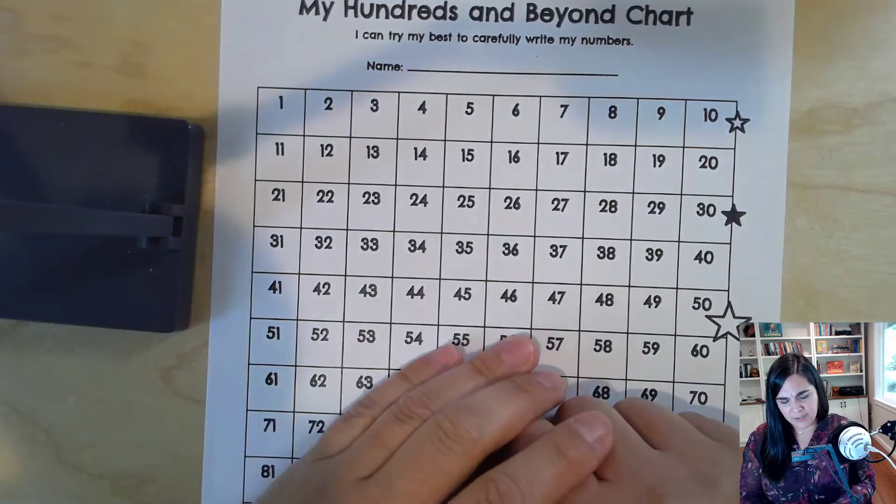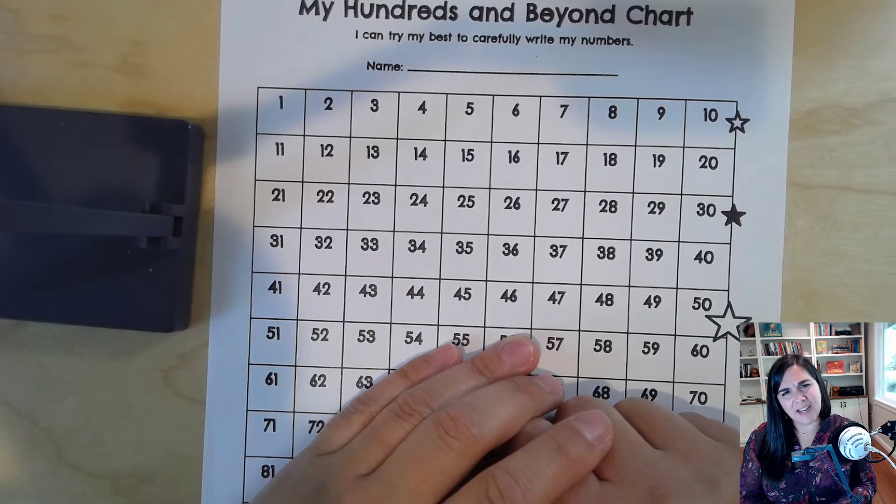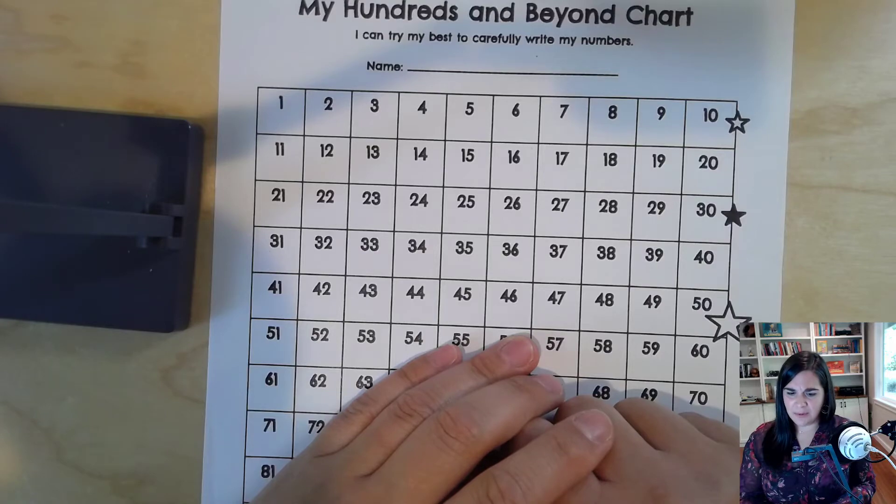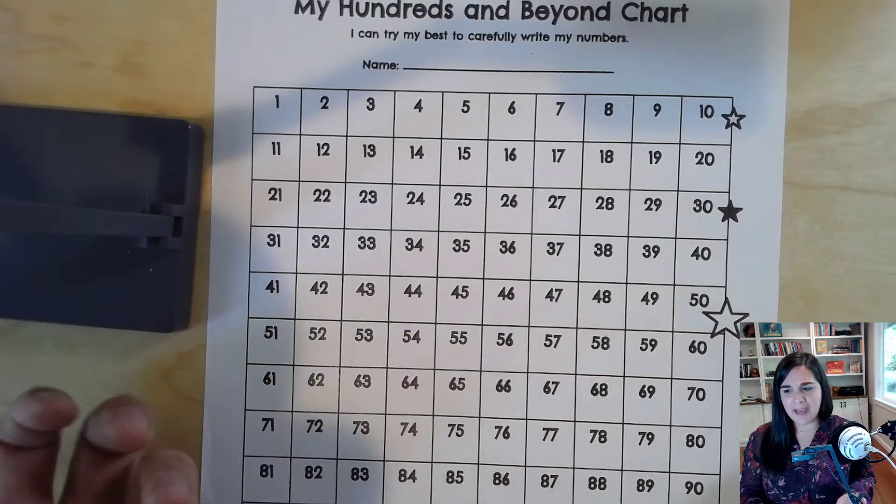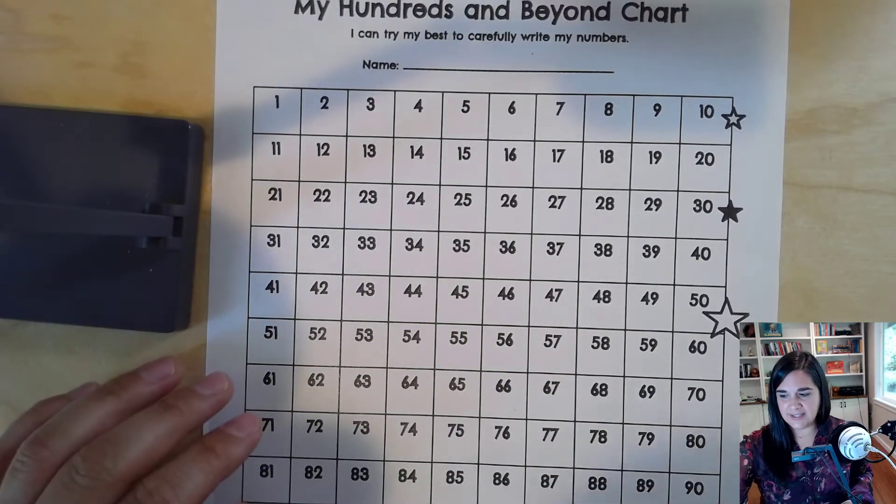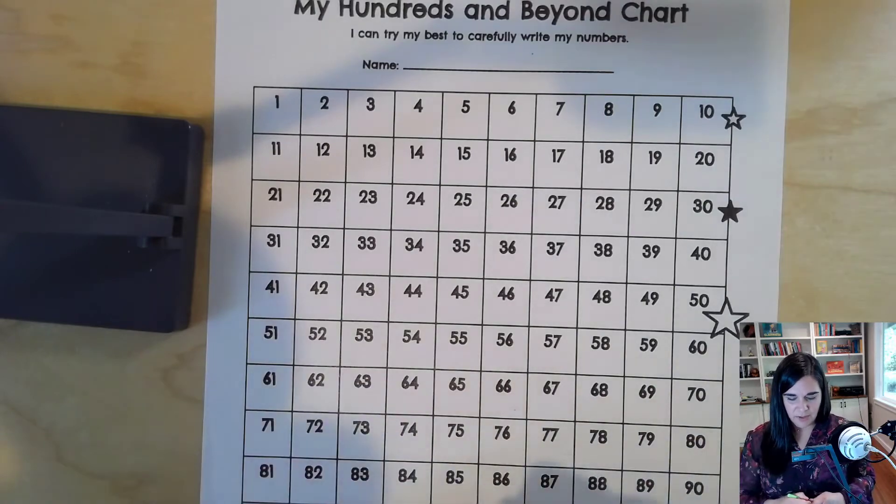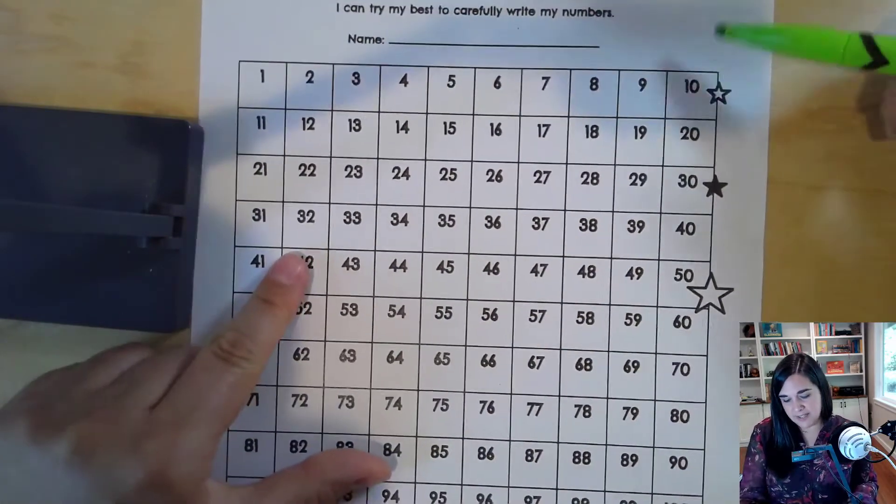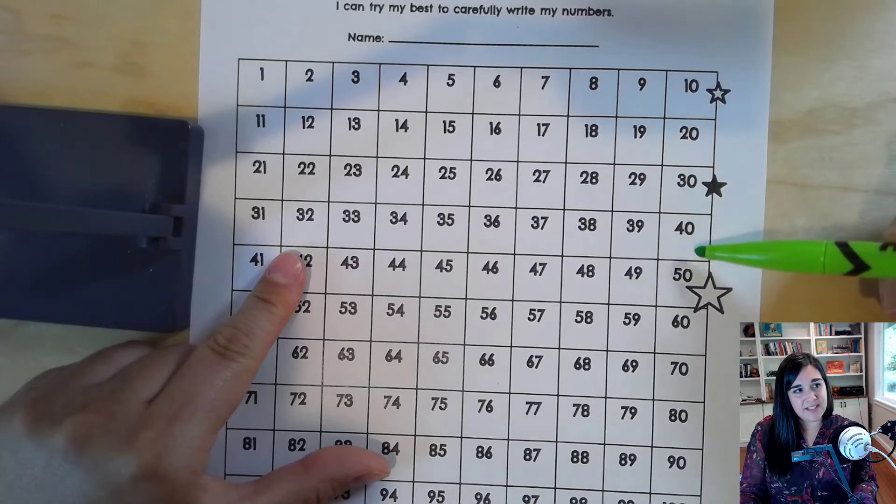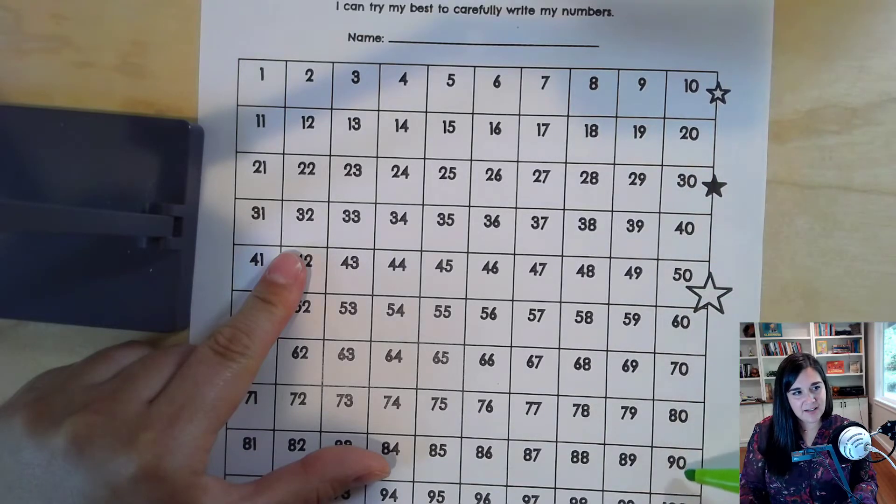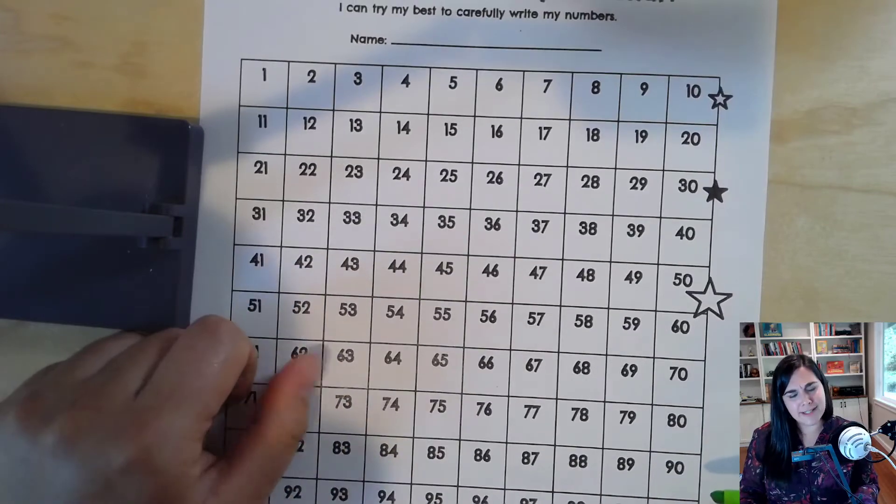Now I'm going to look at this hundreds grid. And you know what I notice? I bet you notice it too. There are some interesting patterns. For example, do you notice that all of the numbers in this row have a zero at the end? Huh. Well, that's interesting.